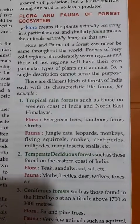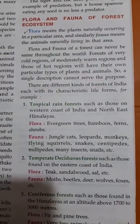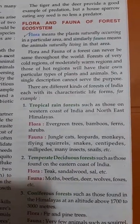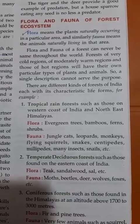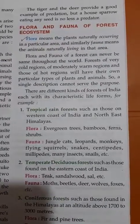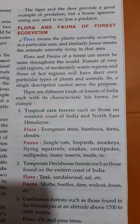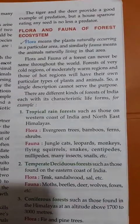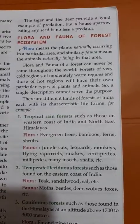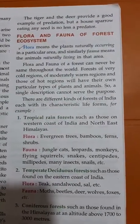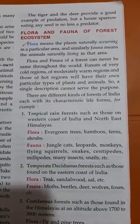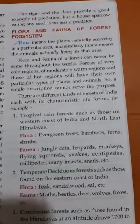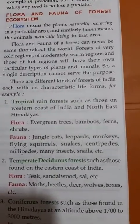Now flora — what does it mean? It is the naturally occurring plants in that particular area. And fauna means the naturally occurring animals in that particular area. Now flora and fauna of a forest can never be the same everywhere in all the forests, because the temperature of different forests is very different.